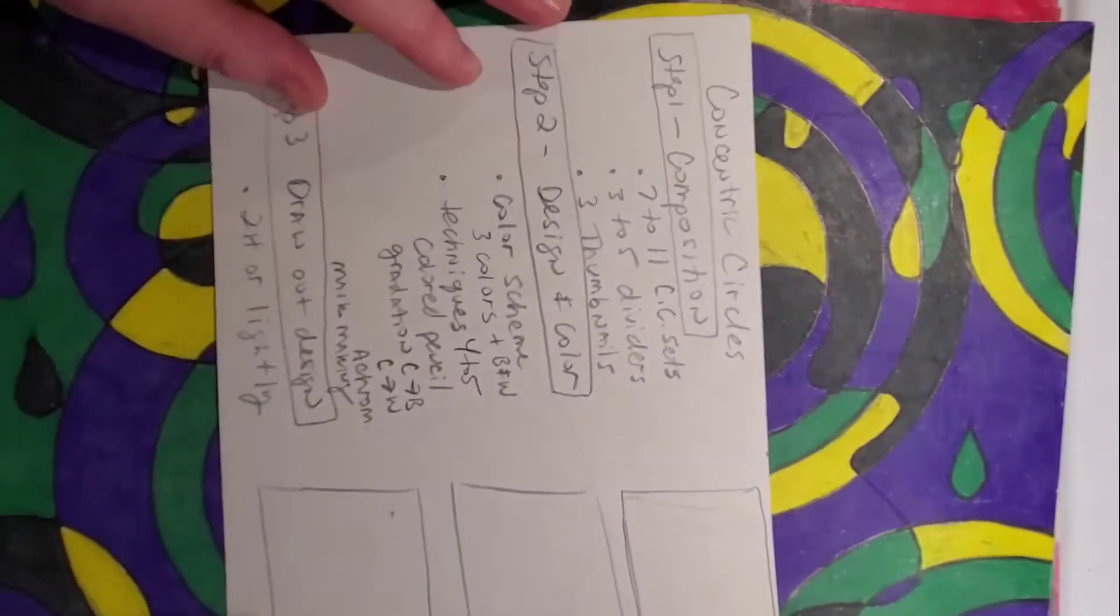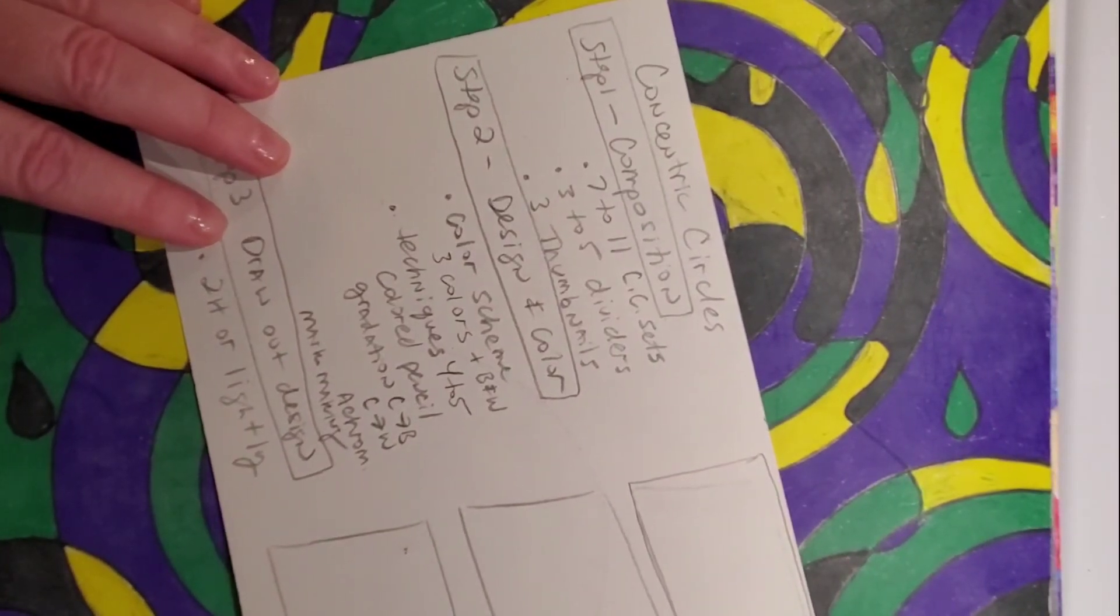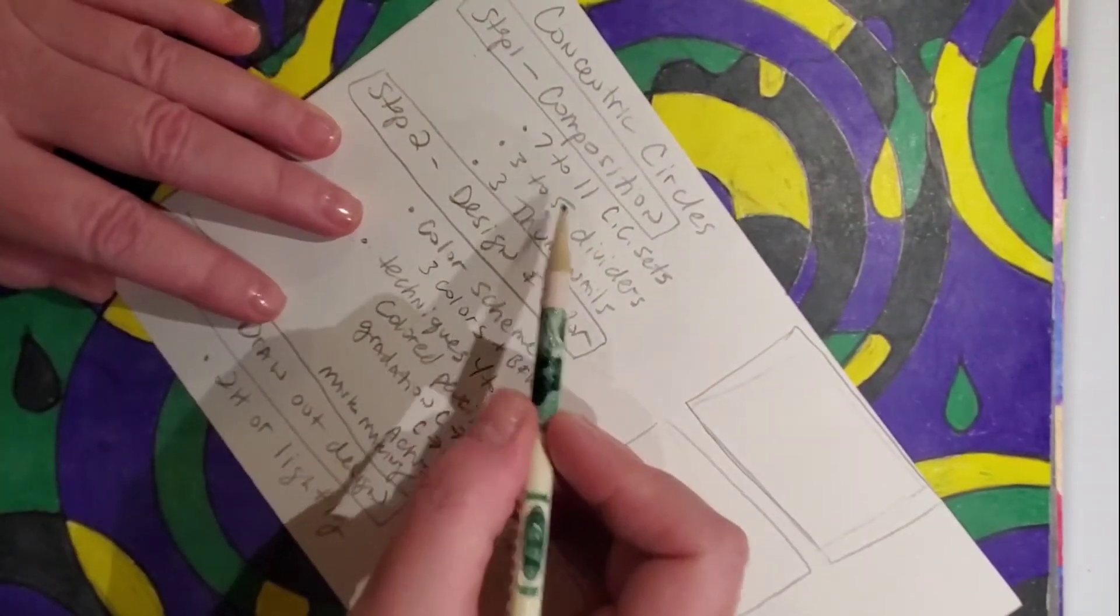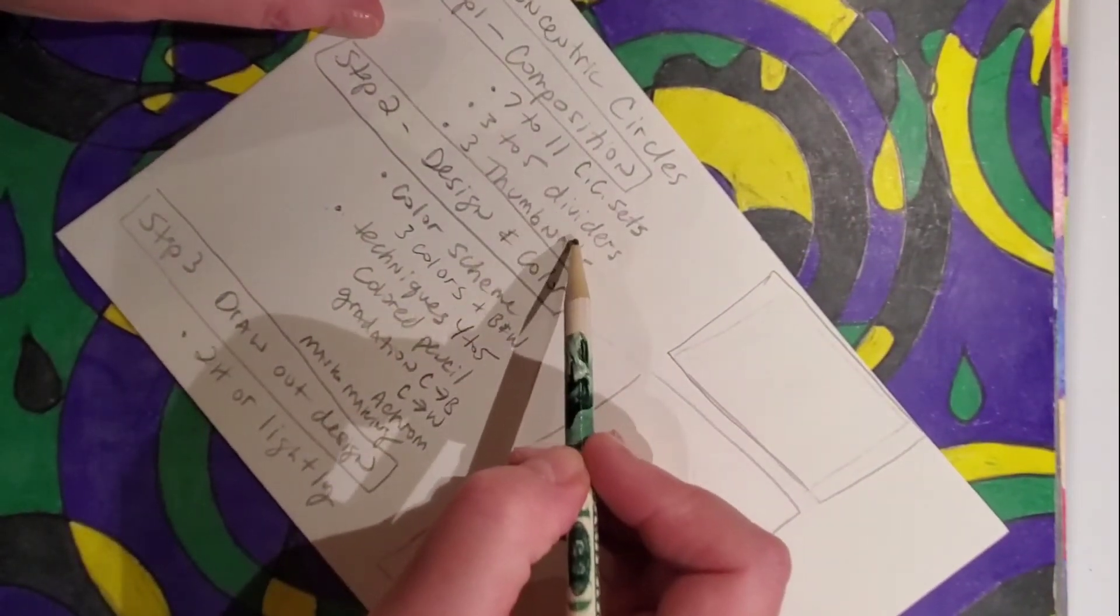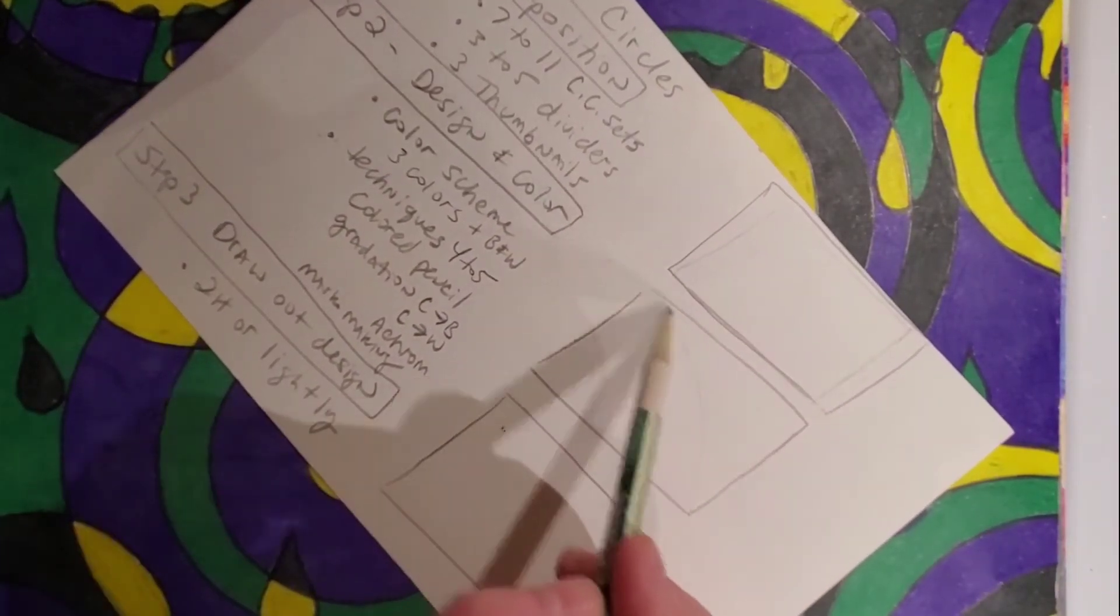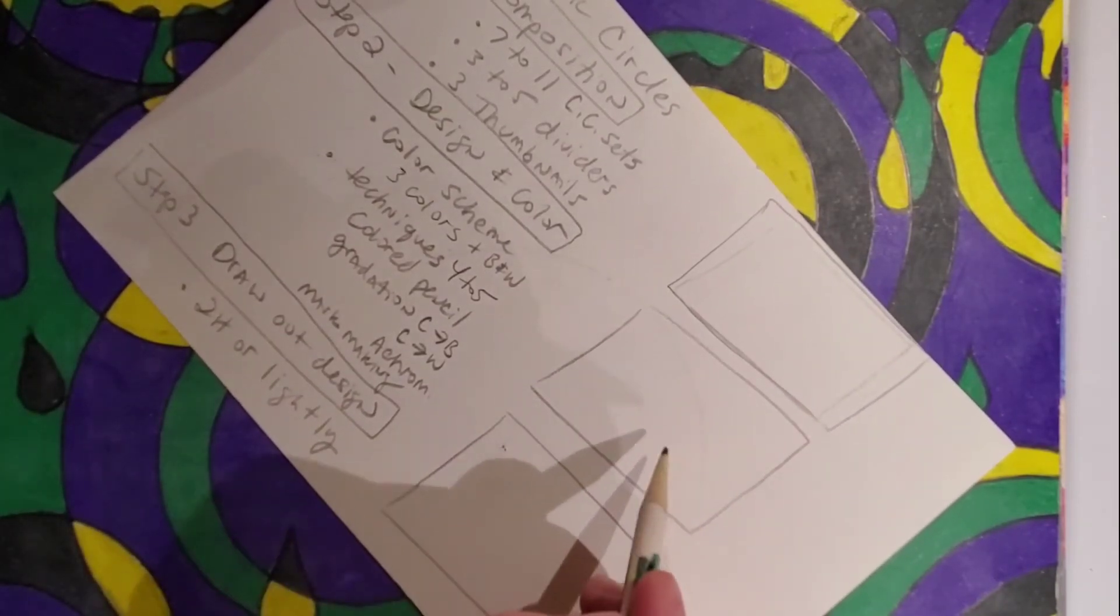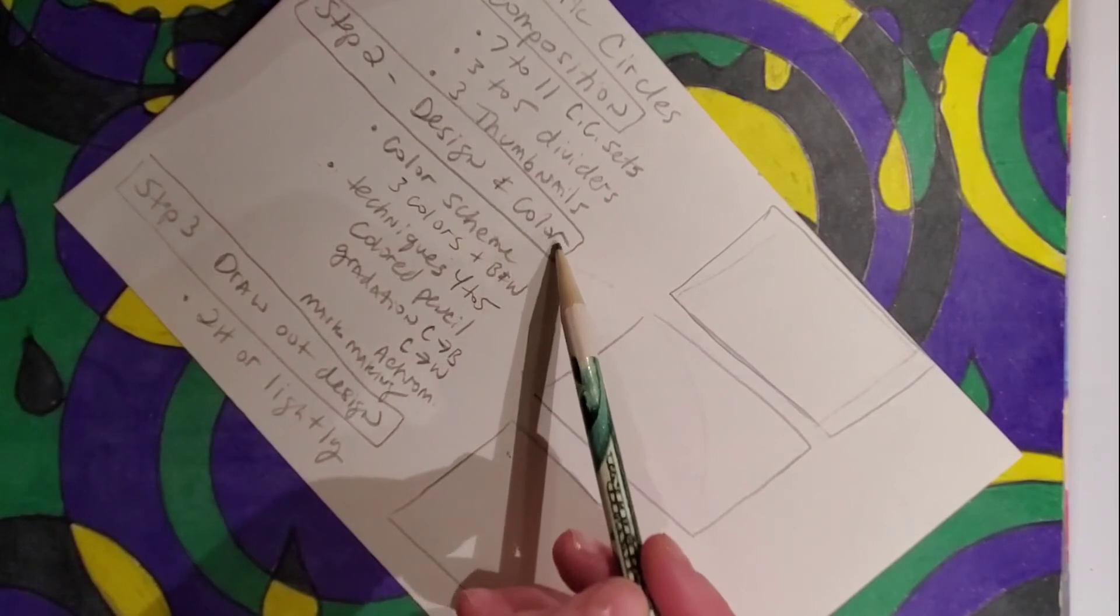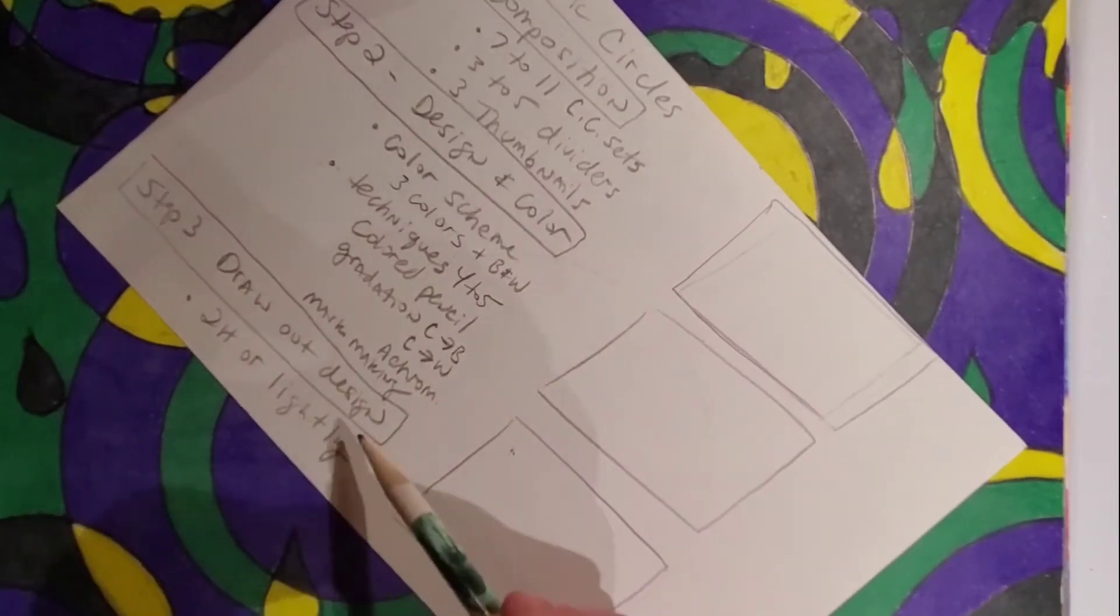Let's look at some of the guidelines for this assignment. For concentric circles, I would like for you to draw a composition with three to seven sets of concentric circles, three to five divider lines, and we're going to draw three thumbnail sketches. A thumbnail sketch is just a small drawing, maybe two to three inches, where you plan out what you want to do.